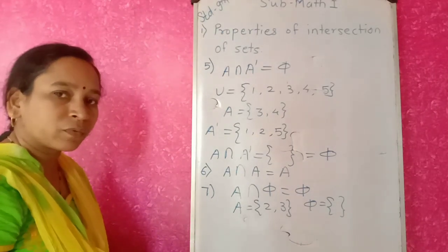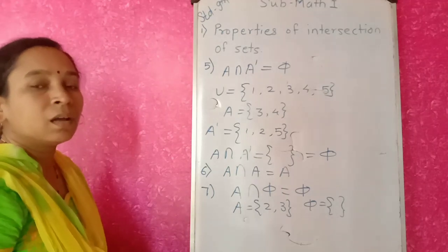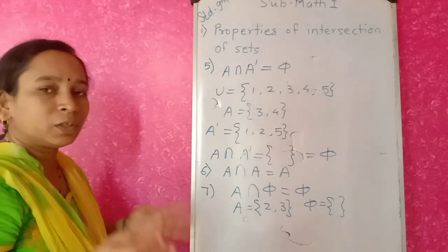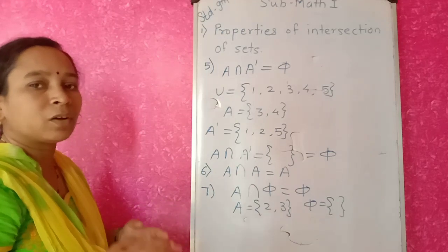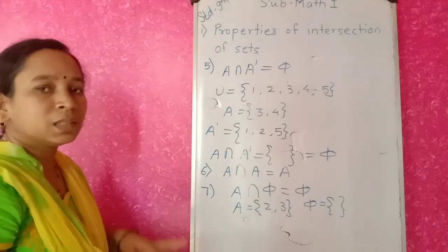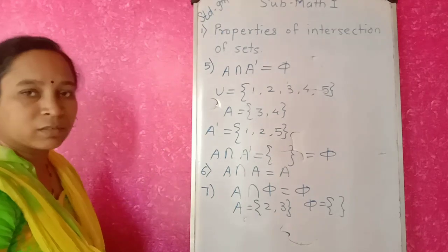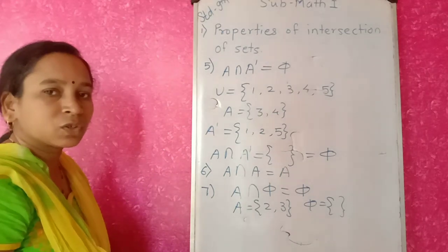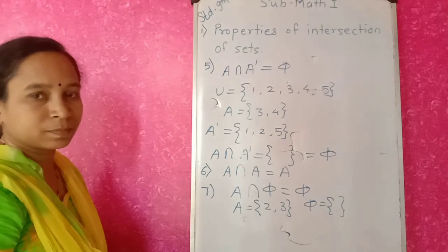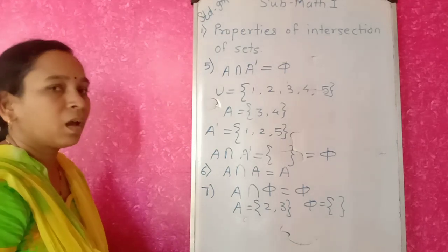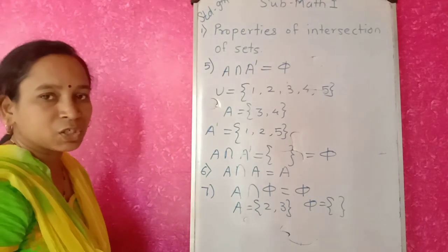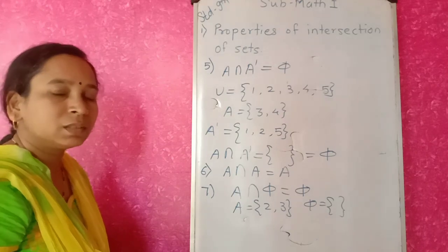Once again, to revise: the intersection of A and B of any two sets means it is the set of common elements which are present in both sets. In this way we have studied the intersection of sets and its properties of intersection of sets. I hope you have understood this operation of intersection.